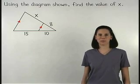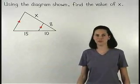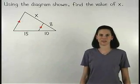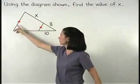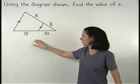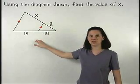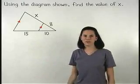In this example, we're asked to use the diagram shown to find the value of x. Notice that we have a line that is parallel to a side of the big triangle, and it intersects the other two sides of the big triangle, so we know that it divides these two sides proportionally.